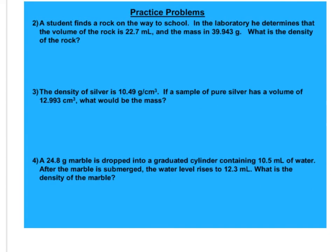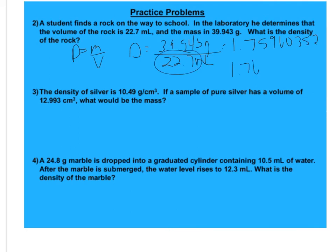A student finds a rock on the way to school. In the lab, he determines that the volume of the rock is 22.7 milliliters, and the mass is 39.943 grams. What is the density of the rock? So I'm going to plug it into my density equation. So 39.943 grams is my mass. 22.7 milliliters. And the calculator says 1.75960352, and so I only need 3 sig figs, so 1.76 grams per milliliter is my answer.